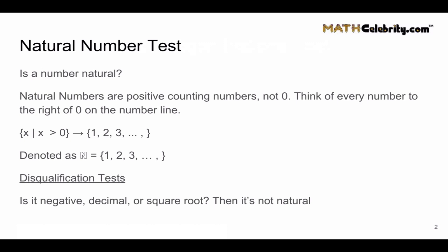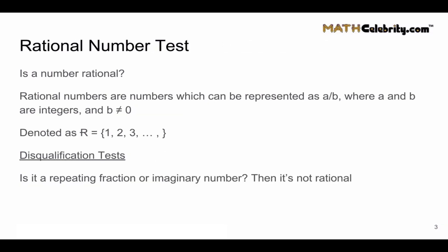Now let's move to rational numbers. Rational numbers are numbers which can be represented as a/b or a divided by b, where both a and b are integers and b is not equal to zero.